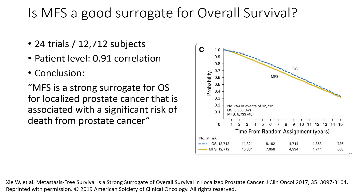There have been several studies that looked at the correlation between metastasis-free survival and overall survival. This is an example of one study that looked at 24 trials with over 12,000 participants. At the patient level, there was a 0.91 correlation. If you look at the Kaplan-Meier curve shown in this diagram, there's almost complete overlap between metastasis-free survival in the yellow line and overall survival in the blue line. Metastasis-free survival is not perfect for predicting overall survival, but one important factor the FDA considered was whether metastasis-free survival showed a substantial difference between intervention and placebo.